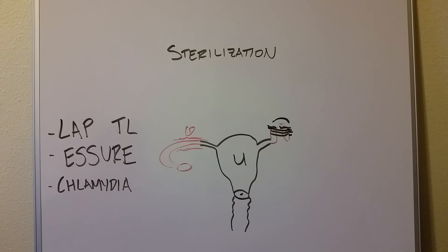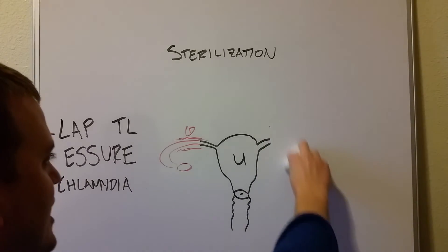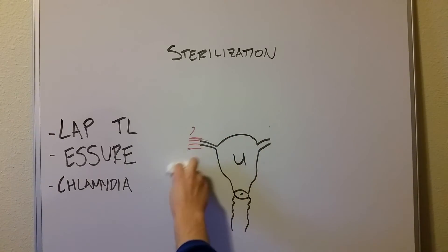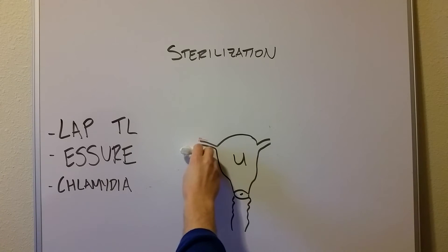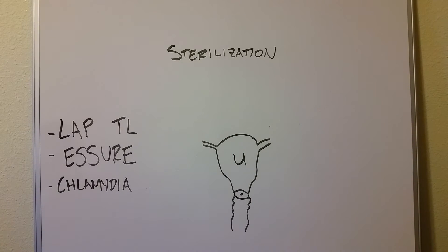So there are three different ways that a tubal ligation — whether laparoscopic or open — stops ovulation. Now let's talk about the second way, which is kind of a newer approach. It came around 2002 or 2003: the Essure procedure.